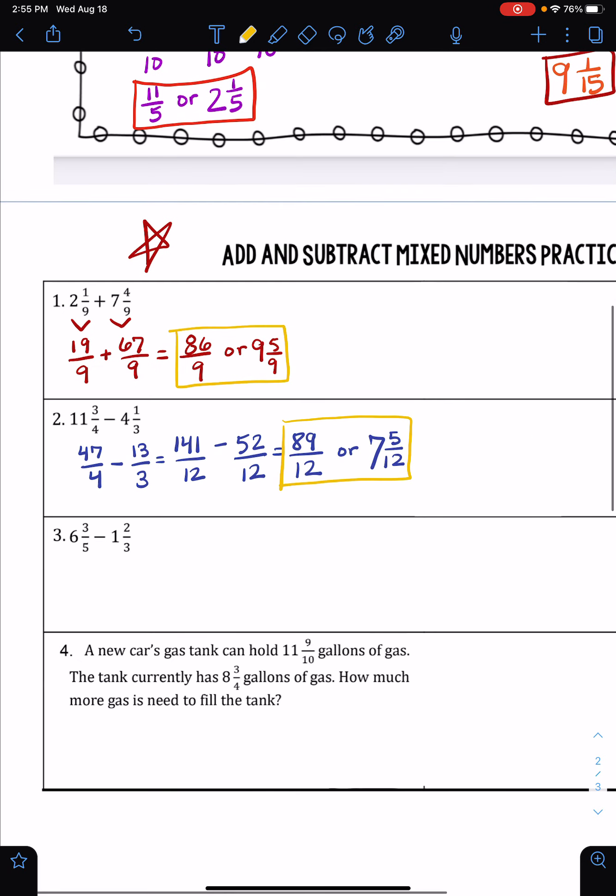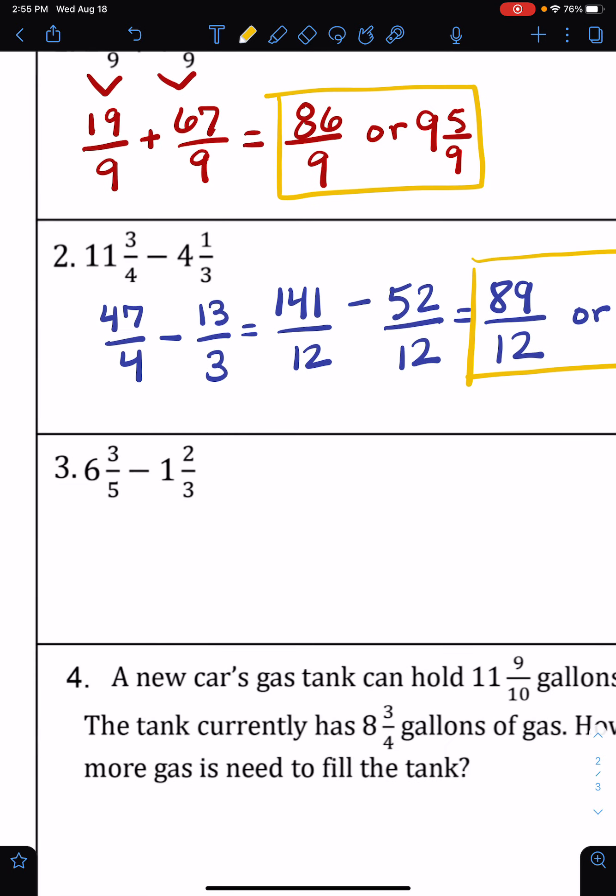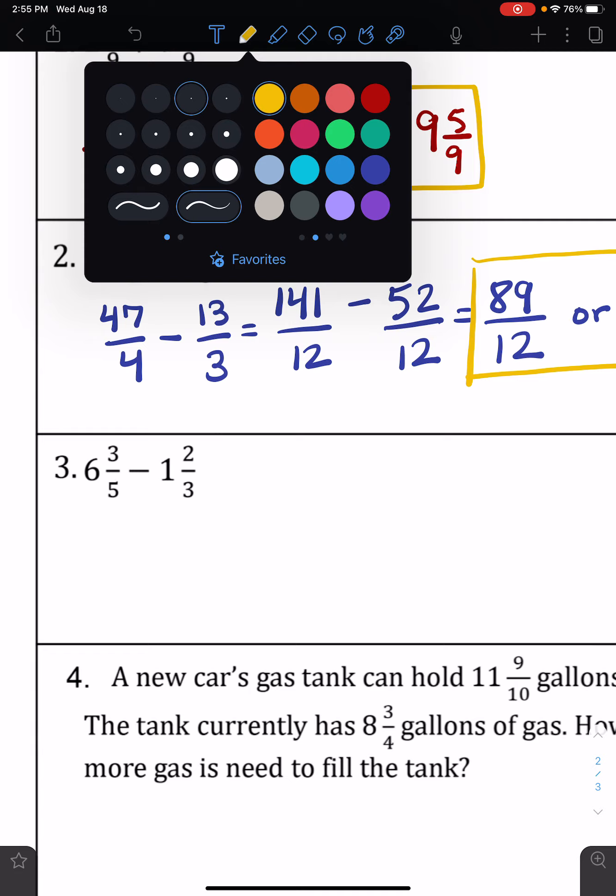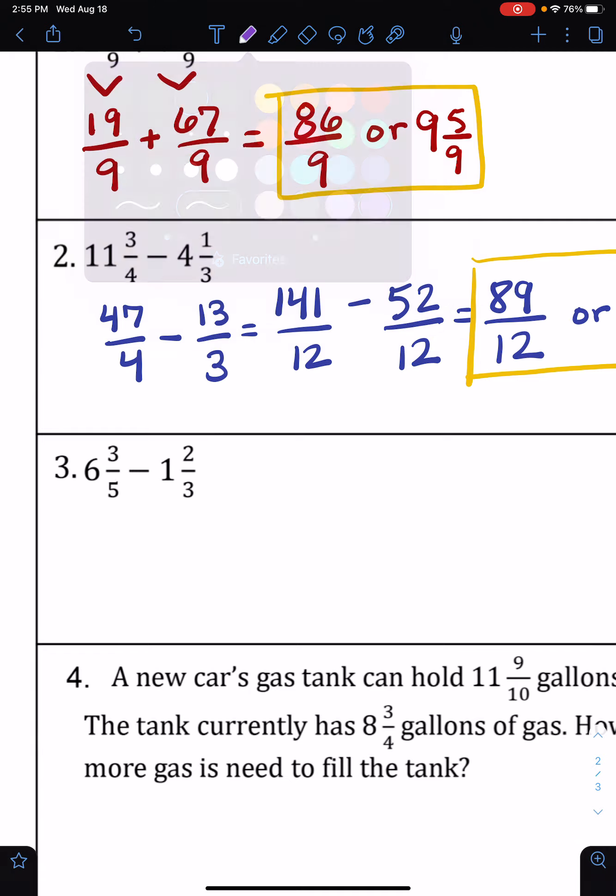For number three, let's change those to improper fractions to start. So we have 33 fifths and 5 thirds. We need common denominators. We'll use 15—that's the smallest number that 5 and 3 go into evenly. Since I have to multiply 5 times 3 to get 15, I'll do 33 times 3 to get 99.